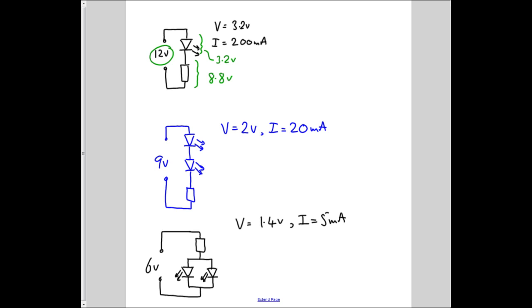The current is 200 milliamps, that's how we know it's a power LED, and therefore R equals the resistor voltage, which is 8.8 divided by 200 milliamps, which is 0.2 amps, which is 88 divided by 2, which is 44 ohms.